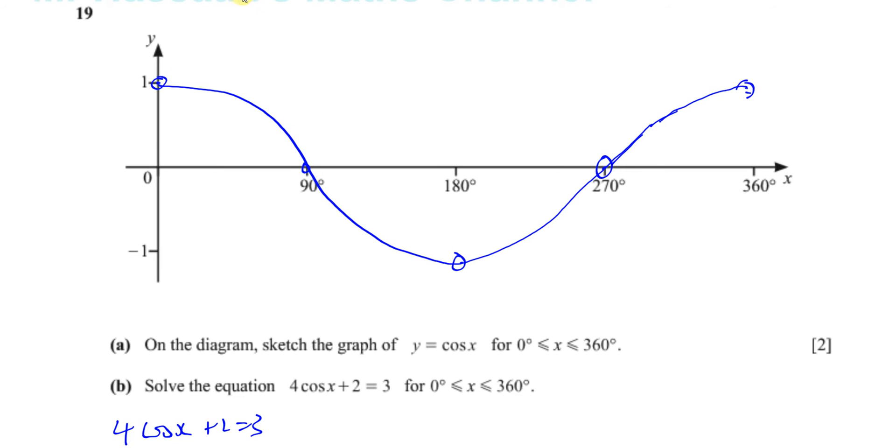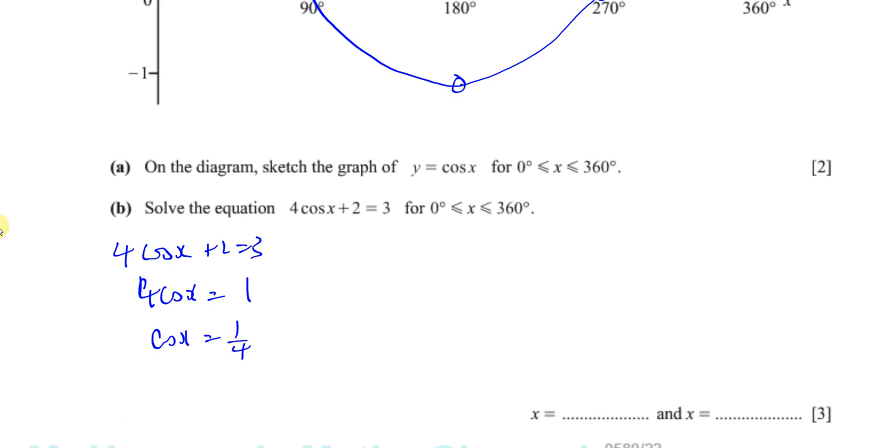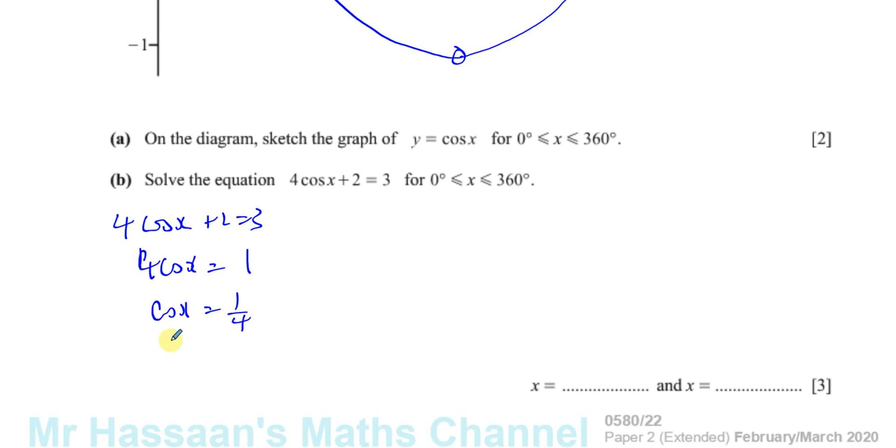Okay, so you've got to find all the values of x where cos x equals a quarter. And if you think about what it looks like on the curve, a quarter is about here. So we can see that in this range, there are two values of x where y is equal to a quarter. What we can do now is find the first one. You use the calculator. We say x is equal to inverse cosine of a quarter. That will give us what's called the principal angle.